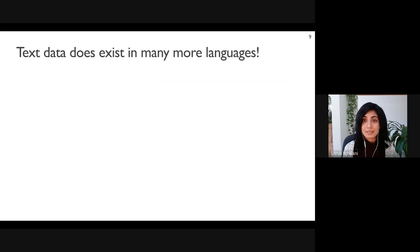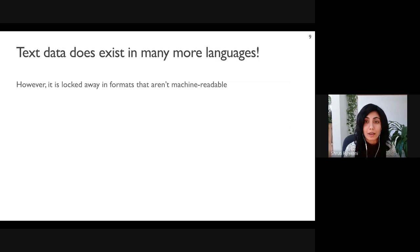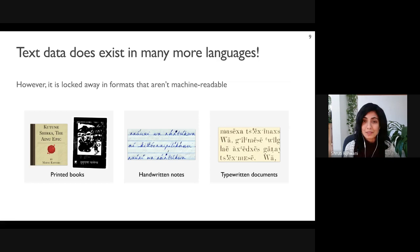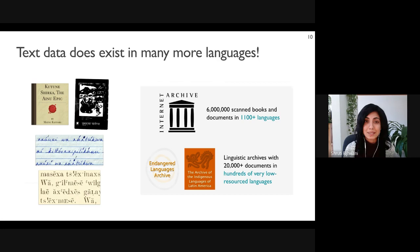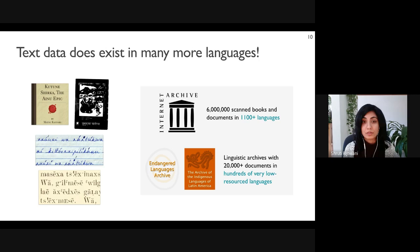It's actually not true that text data doesn't exist in many of these languages — however, it's locked away in formats that aren't machine readable. There is a vast amount of text available only in printed books, handwritten notes, and typewritten documents. The Internet Archive has over six million scanned books in at least 1,100 languages, significantly larger than what current state-of-the-art multilingual models support. There are also tens of thousands of documents in linguistic archives like the Endangered Languages Archive and the Archive of the Indigenous Languages of Latin America.